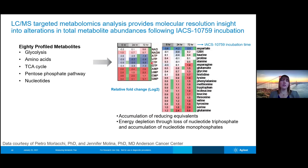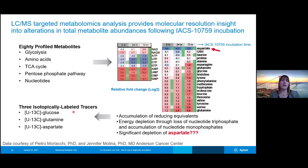From this targeted metabolomics, we could see that there was an accumulation of reducing equivalents in NADH, a reduction in nucleotide triphosphates and an increase in nucleotide monophosphates, and then this peculiar decrease in aspartate that was pretty interesting and that they wanted to follow up on. So in this particular study, the focus was on three different isotopically labeled tracers: glucose, glutamine, and aspartate.